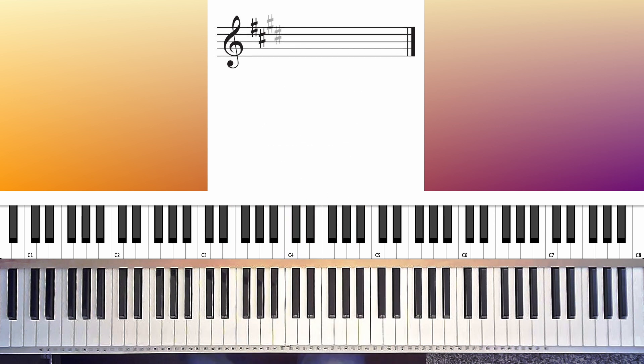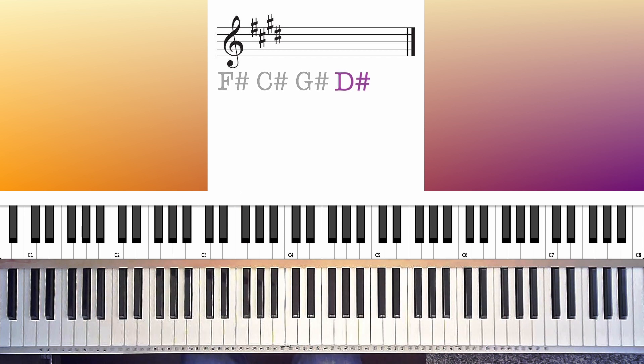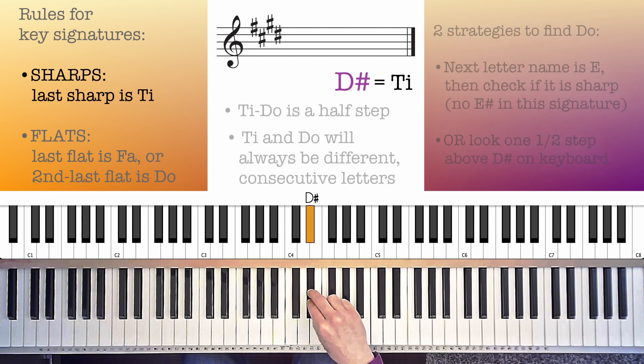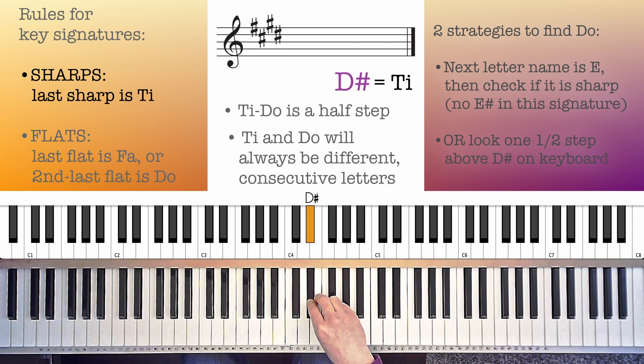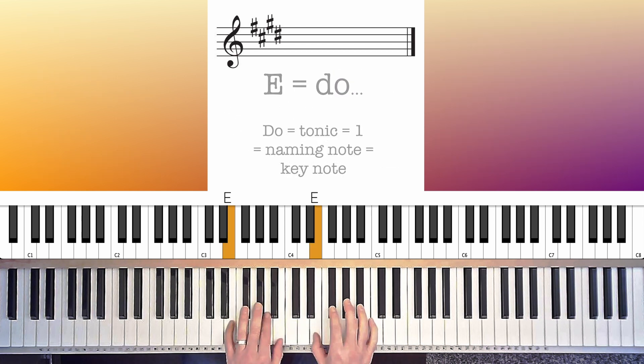Now, use these principles to find Do from any key signature. Here, the sharps are F sharp, C sharp, G sharp, and D sharp. The last sharp is D sharp. The last sharp is T. Next letter name is E. And checking this key signature, E is not sharp. So our Do is E natural. This is the key of E or E major.